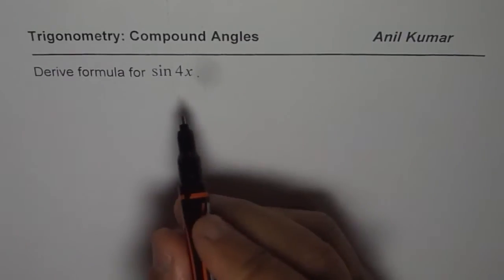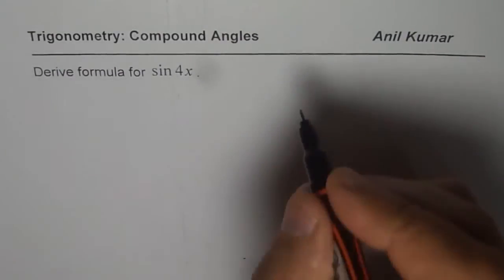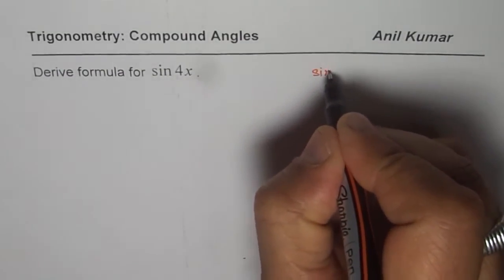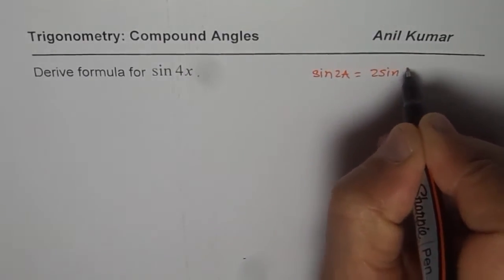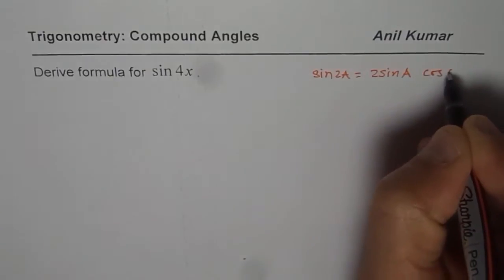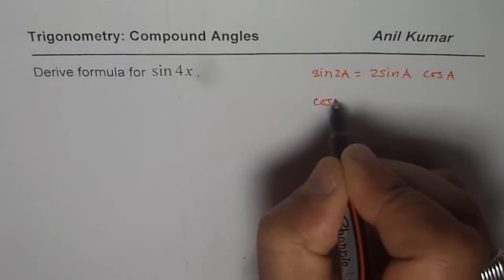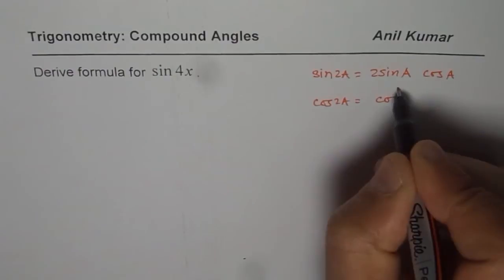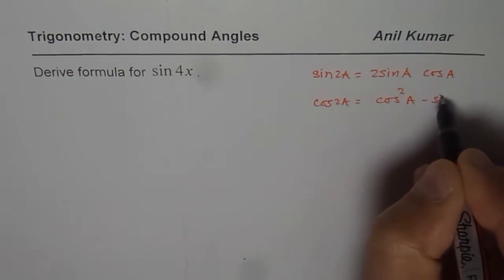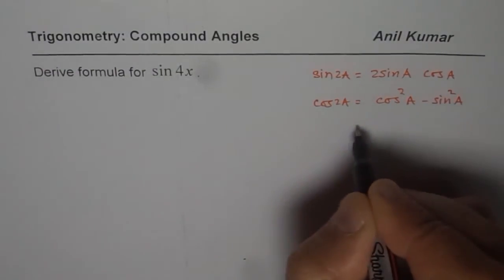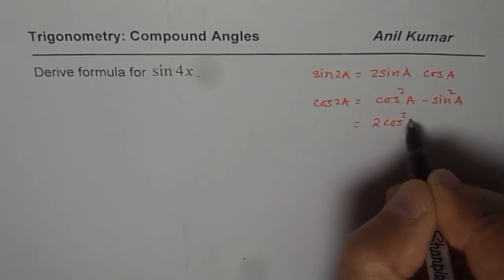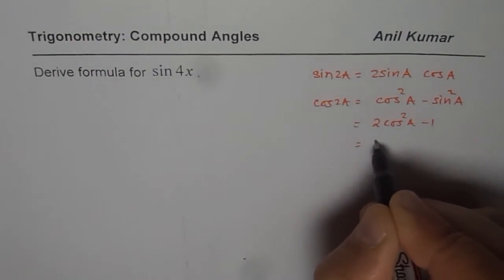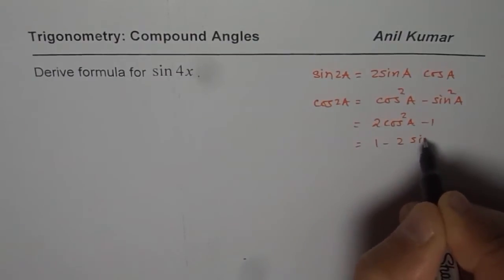Let me remind you of our formulas. We learned that sin 2a can be written as 2 sin a cos a. And cos 2a can be written as cos²a - sin²a. This formula can be written in three different ways: 2cos²a - 1, or 1 - 2sin²a.